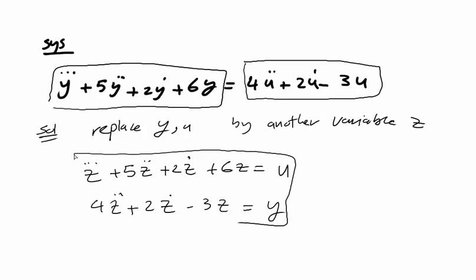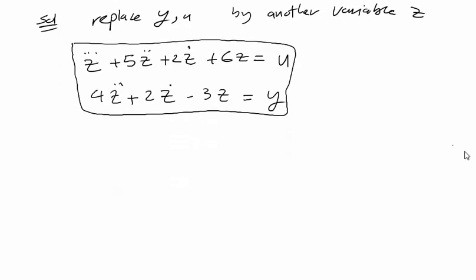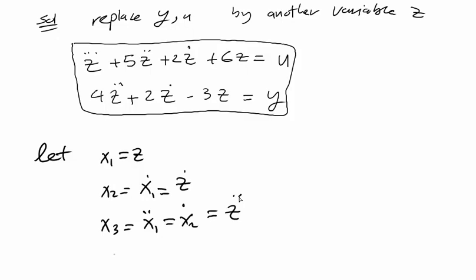Now let x1 equal z, x2 equals x1 dot which equals z dot, and x3 equals x1 double dot which equals x2 dot which equals z double dot. So x3 dot will equal z triple dot.